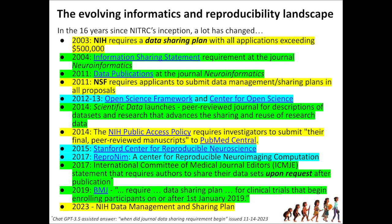Things highlighted in green come from journals and publishers invoking reproducibility and credibility requirements. In 2004, with the inception of the journal Neuroinformatics, requirements to disclose how data, software, et cetera were being shared became required. And in 2011, the journal Neuroinformatics introduced data publications — probably not the first such article type, but a hallmark moment in trying to make data a more prominent part of the publication landscape.